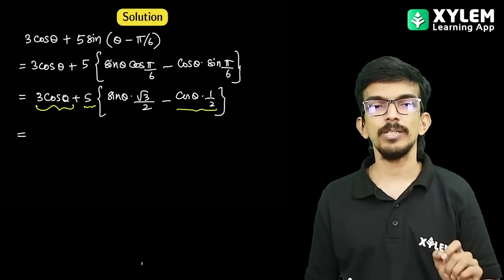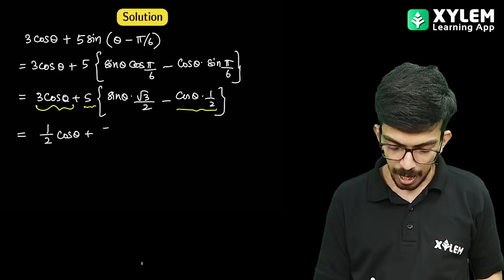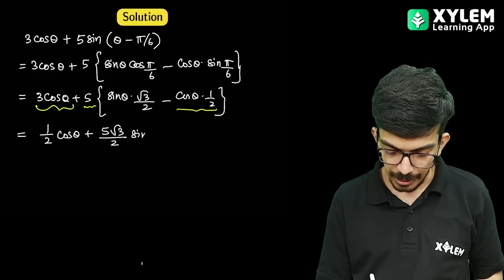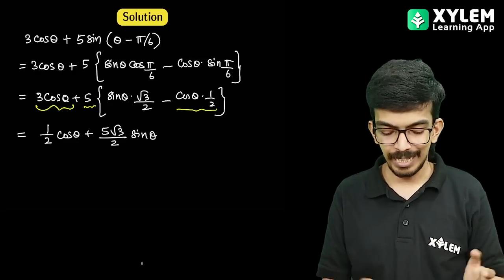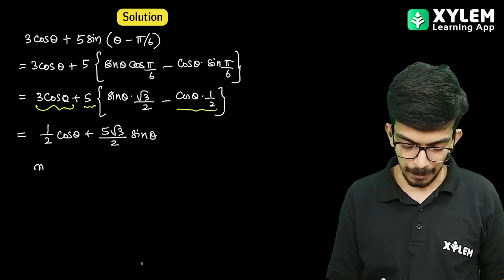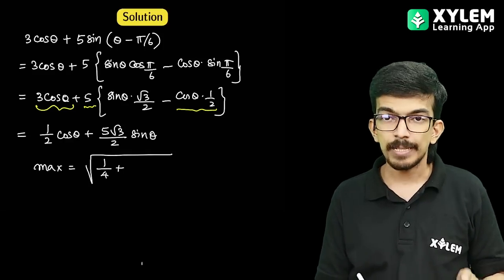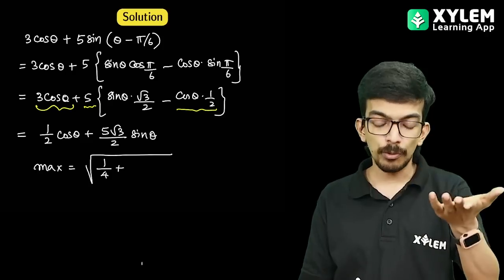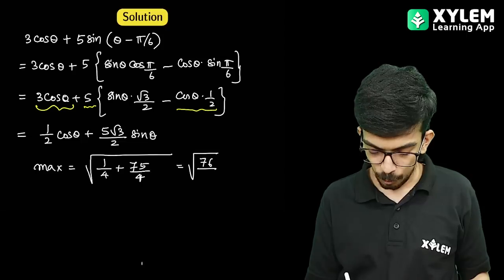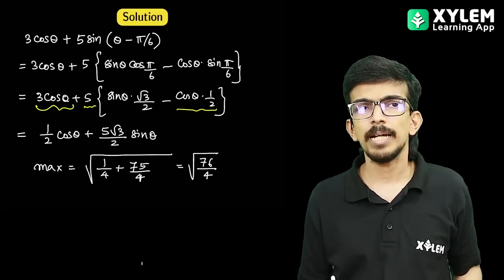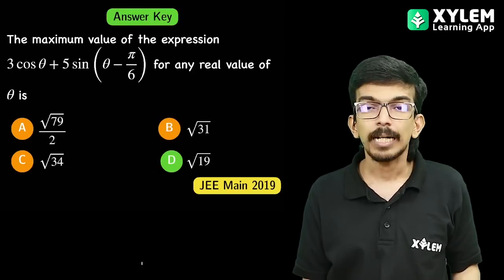3 cos theta minus 5 by 2 cos theta gives us 3 minus 2.5 equals one-half cos theta. So we have half cos theta plus 5 root 3 divided by 2 times sin theta. The maximum value is root over a square plus b square equals root over 1 by 4 plus 75 by 4 equals root 76 by 4 equals root 19.